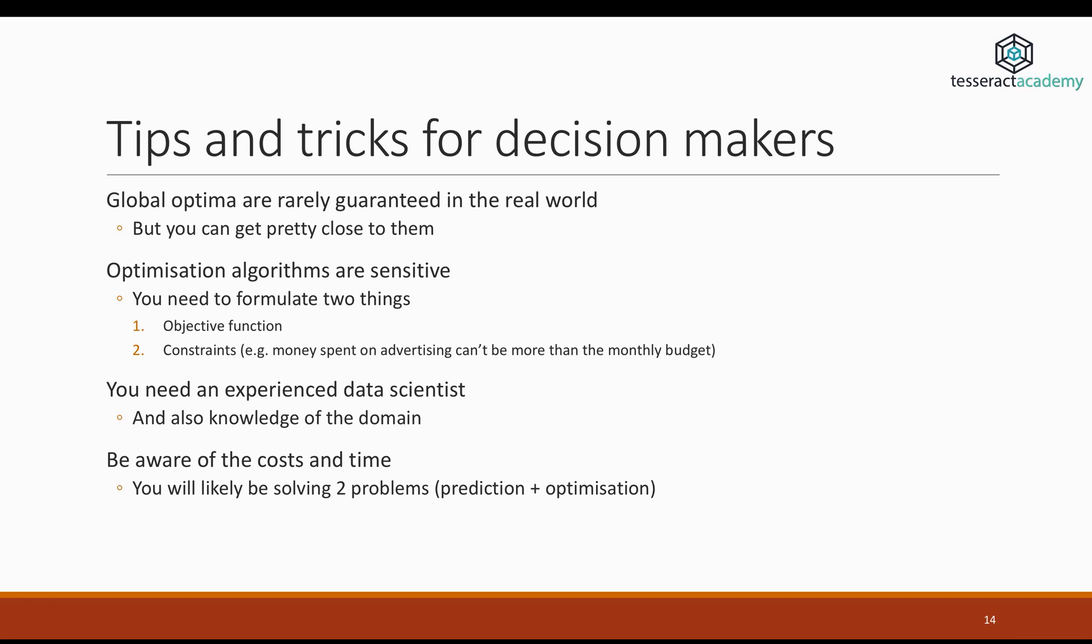Then something else to be aware of is that optimization algorithms can be very sensitive to the parameters you feed into them. So you need to be able to formulate two things clearly. The first one is the objective function and the second one is the constraints. So what I mean by the objective function, this is the thing that you're optimizing. So in some cases, it's very simple, right? So for example, you're a retailer, you're trying to optimize sales. This can be fairly simple. However, in other cases, it can be a bit more complicated and slight differences.